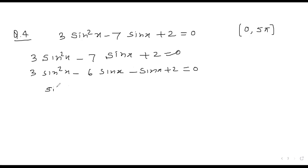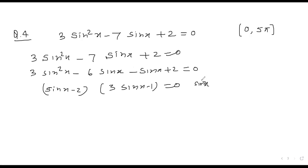Factorizing, we get (sin x − 2)(3 sin x − 1) = 0, giving sin x = 2 (which is not possible) and sin x = 1/3 (which is possible).